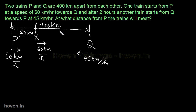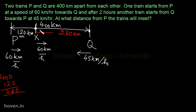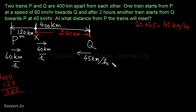इनके बीच का जो distance बचा है वो है 400 minus 120 = 280 km। So this is the distance between them right now। अब यह दोनों trains एक दूसरे की तरफ चल रही हैं, तो इनके बीच का distance cover हो रहा है 60 plus 45 = 105 km per hour पे, क्योंकि यह दोनों मिलकर work कर रही हैं।